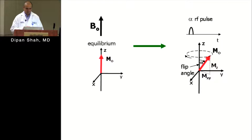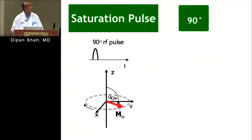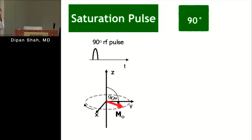This is called a flip angle. A 90-degree flip angle gives the highest transfer of magnetization from longitudinal to transverse plane. After applying a 90-degree pulse, there is no longitudinal magnetization, but a large amount of magnetization in the transverse plane. The protons continue spinning — but now they're spinning in the transverse plane.